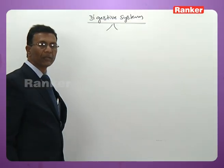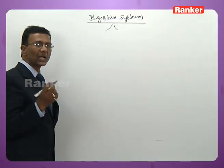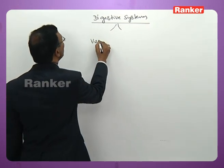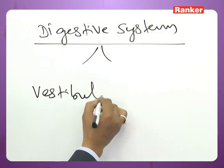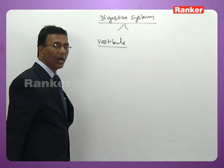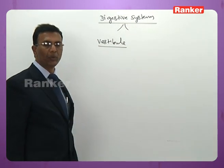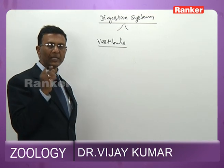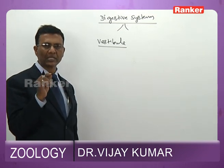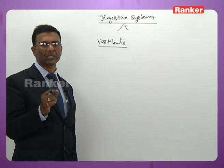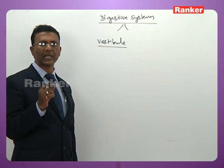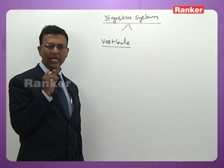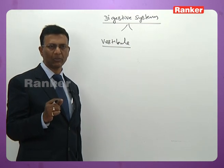The human body's digestive system starts with the anteriormost part of the gut called the vestibule. The anteriormost part of the alimentary canal is called vestibule — the space that lies between the cheeks and gums, and between the lips and gums, is called vestibule.